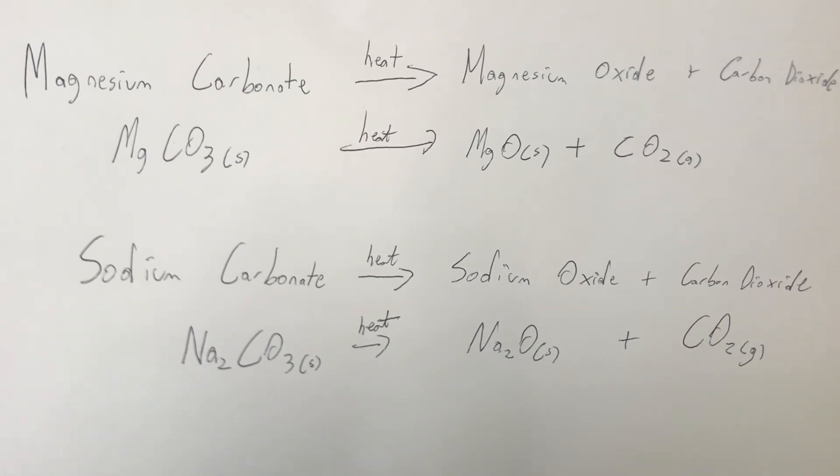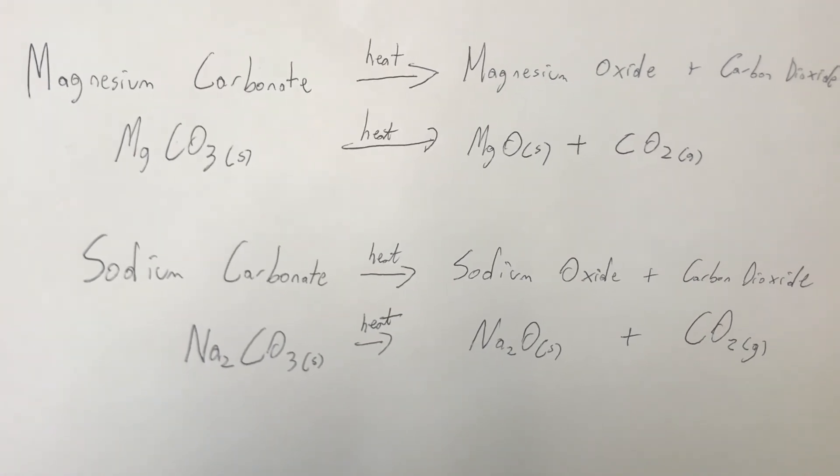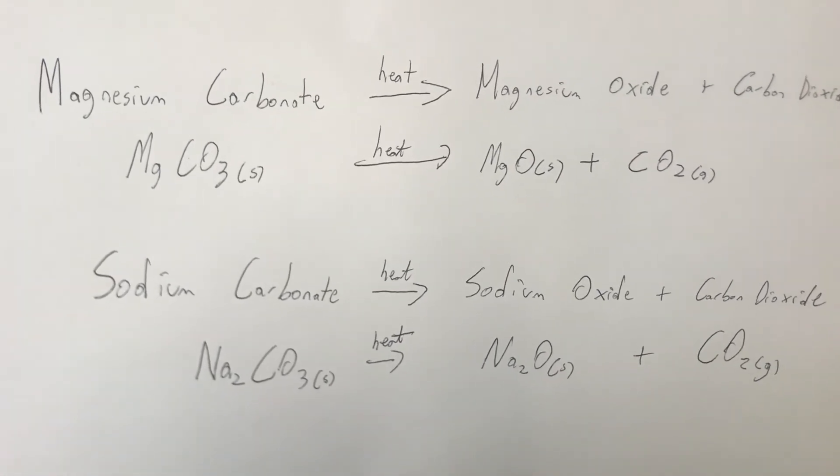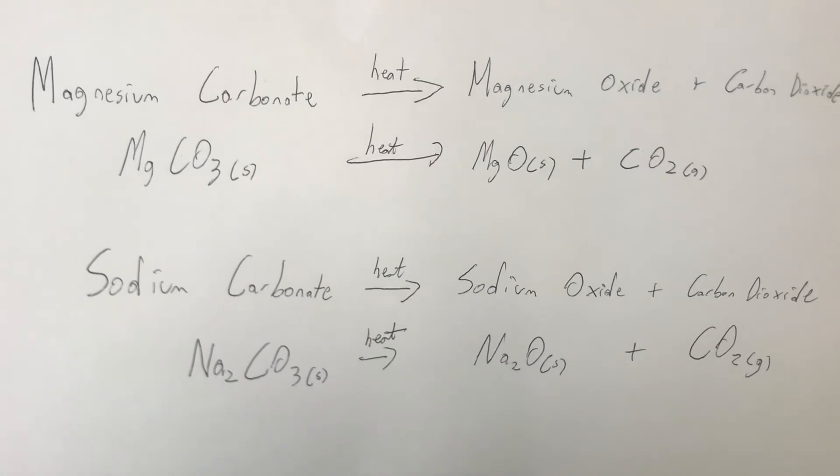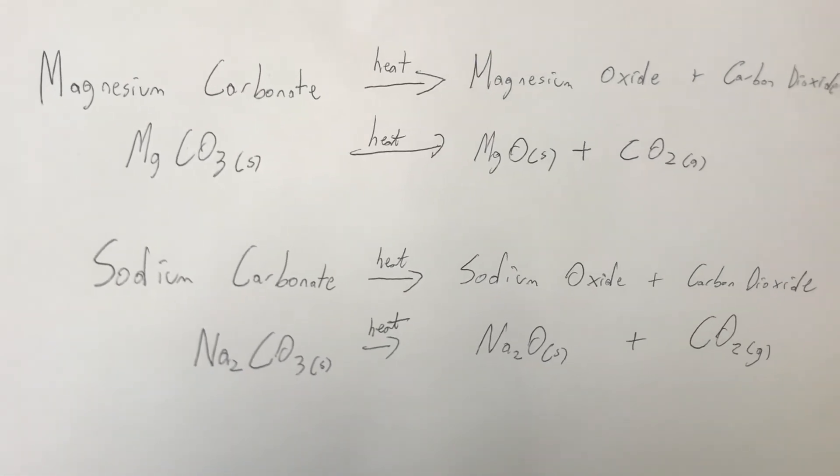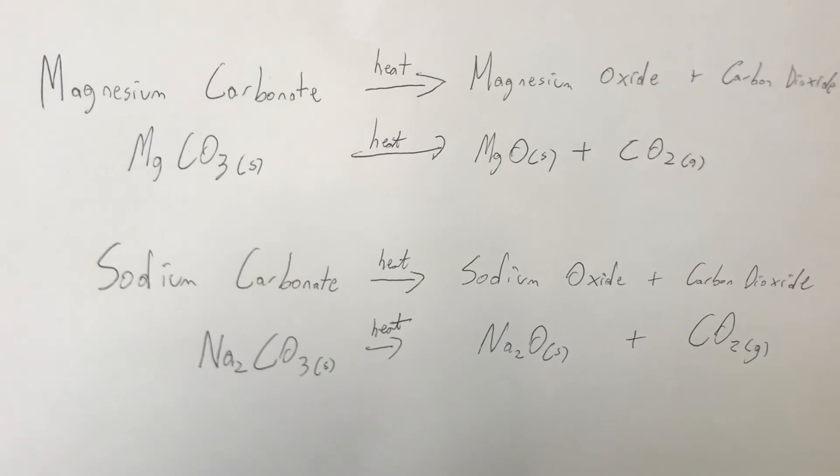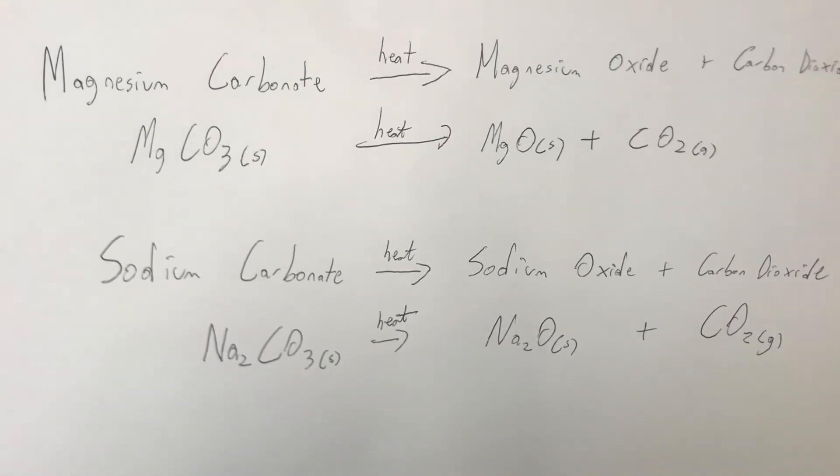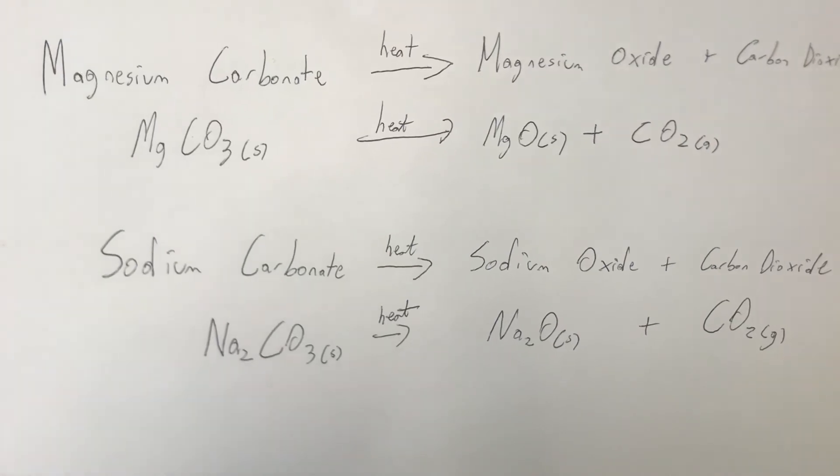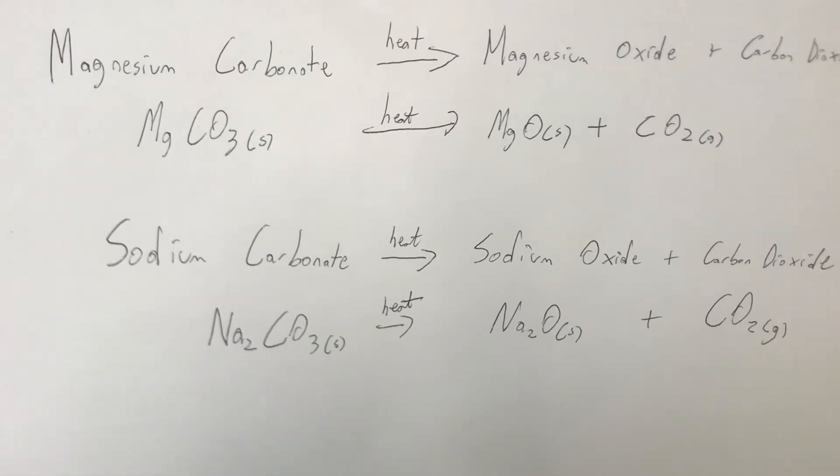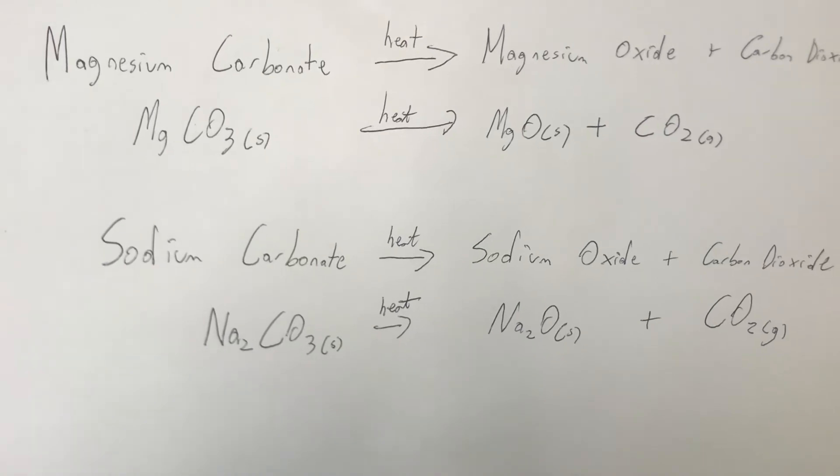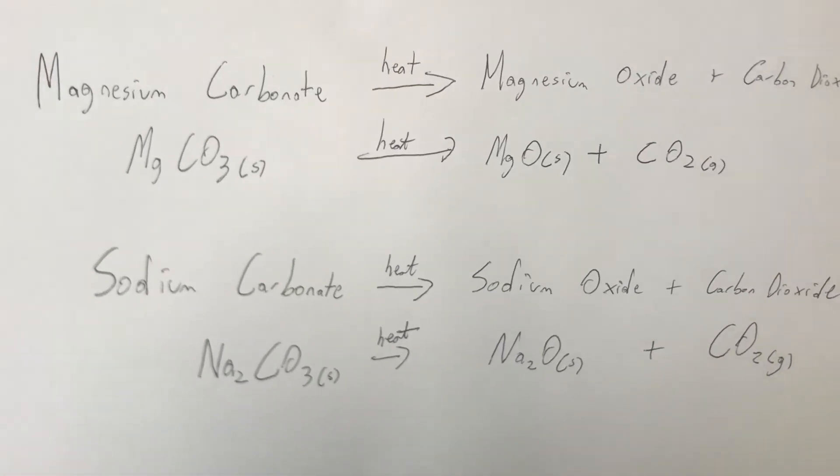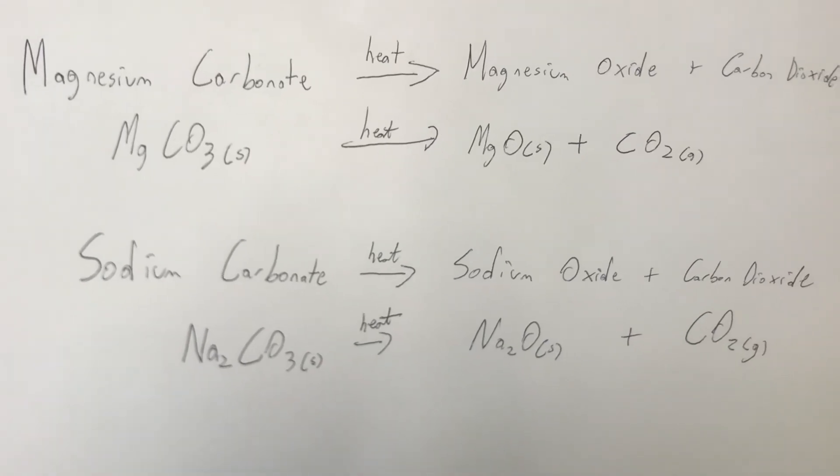To explain these reactions, I've written word and symbol equations for the first two reactions. Magnesium carbonate was thermally decomposed to magnesium oxide solid and carbon dioxide gas, just like sodium carbonate was thermally decomposed to sodium oxide solid and carbon dioxide gas. The magnesium oxide was the white to almost creamish color solid we saw, and we detected the carbon dioxide gas by bubbling it through lime water.